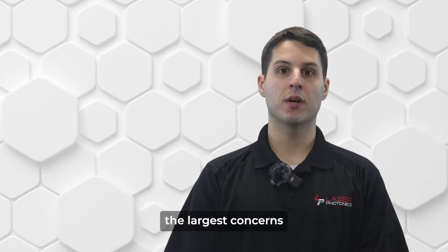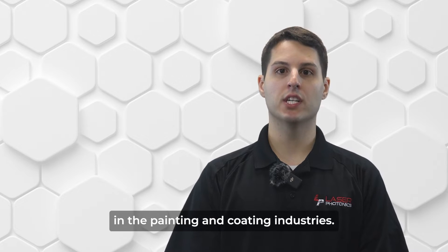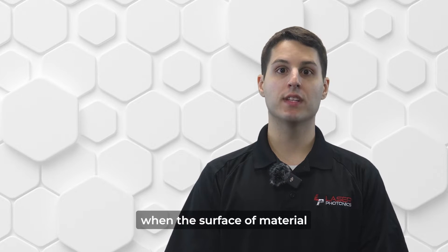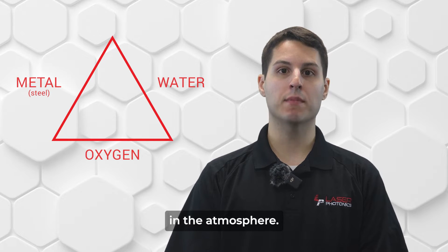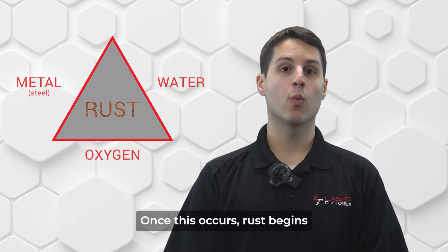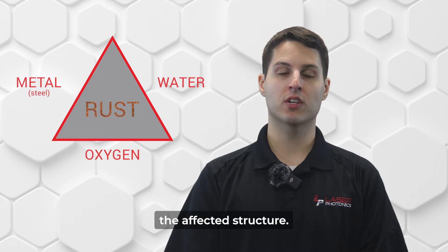Corrosion and rust are some of the largest concerns that plague professionals in the painting and coating industries. Corrosion takes place when the surface of a material like steel interacts with oxygen and water in the atmosphere. Once this occurs, rust begins to form and weaken the affected structure.